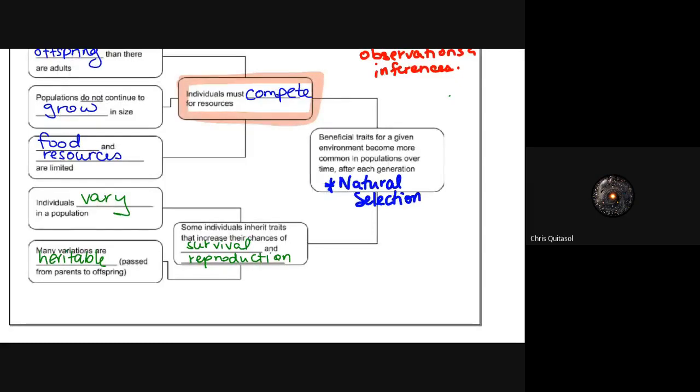The last two observations that connect to the second inference: Individuals vary in a population. There's a lot of variation within the population. When we look at even just in our class, the variation between hair color, eye color, skin color, height—there's so much variation within a population and species. Darwin really saw that within some of the things he observed on the Galapagos. Many of those variations are heritable, or they're passed from parent to offspring.